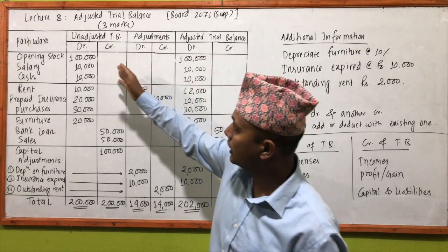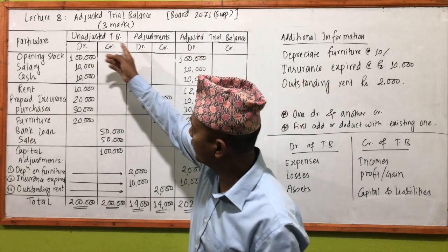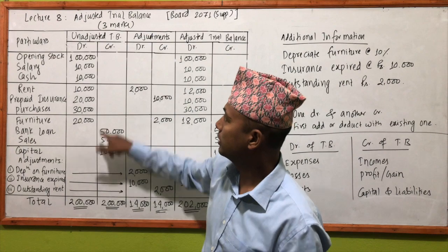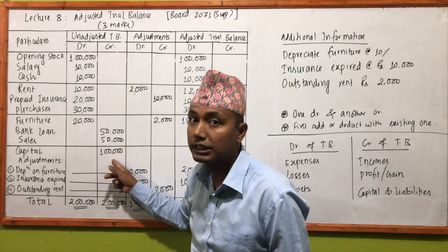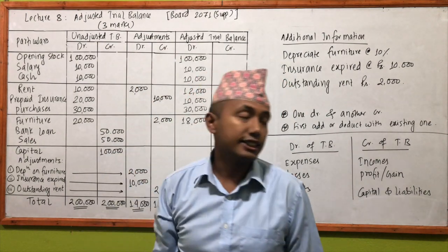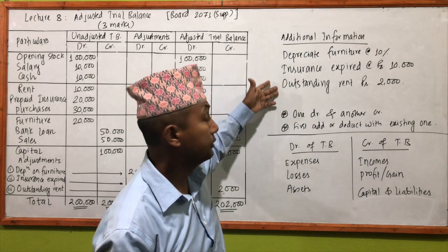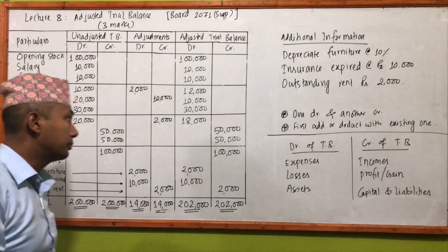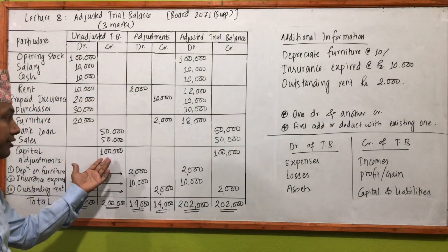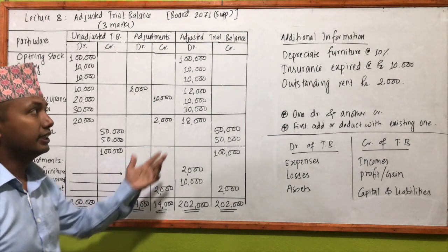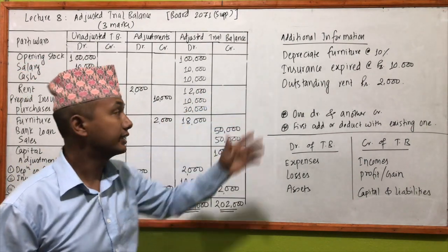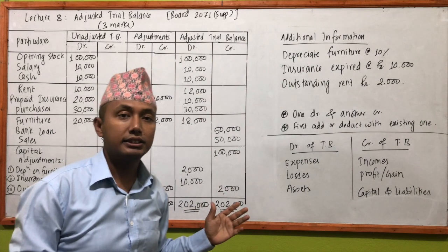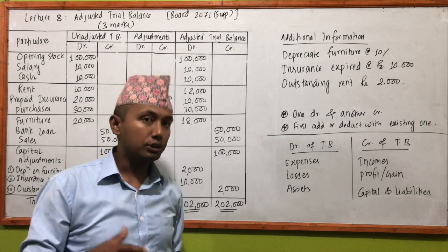We have a question on adjusted trial balance. We have a capital sum on the unadjusted trial balance. We have an adjustment to make, and from that we will prepare an adjusted trial balance. That is the question.